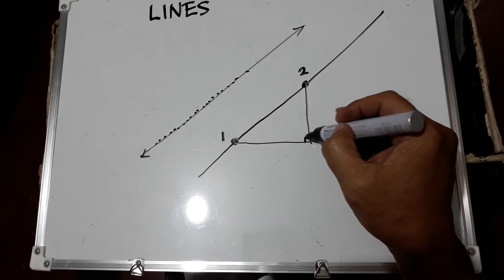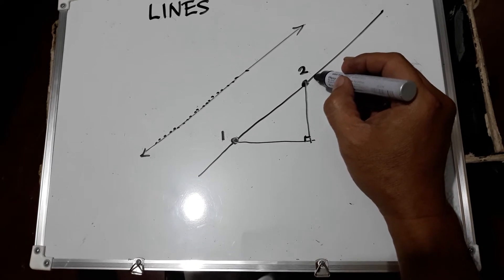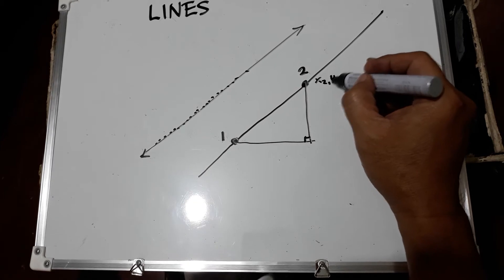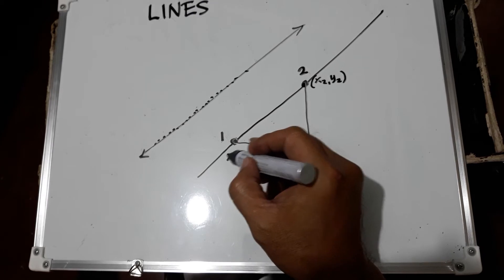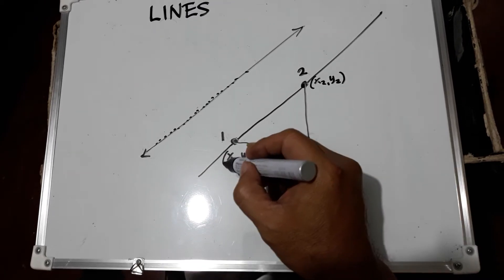This is a right triangle. So this one, point 2, we are going to call the coordinates here as x sub 2 and y sub 2, and for point 1 we can call this one x sub 1 and y sub 1.